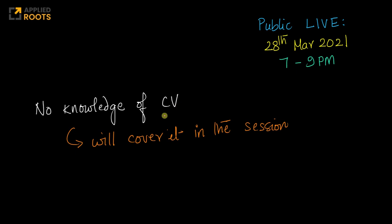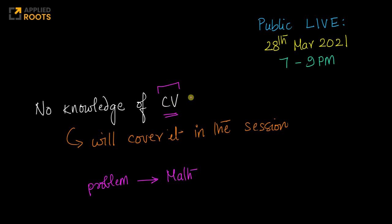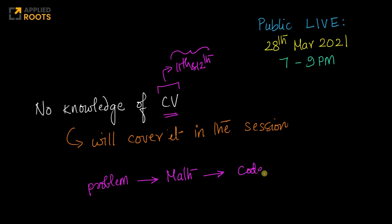We will not make any assumption of your knowledge of computer vision, image processing, or the mathematics underlying this. We will take up a real-world problem, explain some of the foundational math related to computer vision and image processing. Most of the math is matrix algebra from your 11th and 12th class. If you have forgotten some of it, it's okay — we will recap it for you. Once we understand the math, we will go ahead and write the code to solve the problem, all in OpenCV.